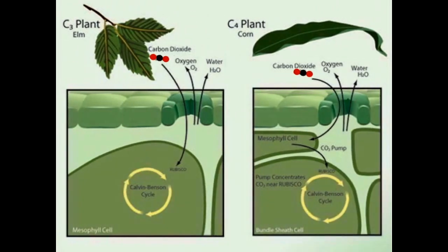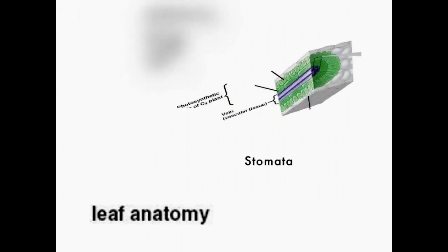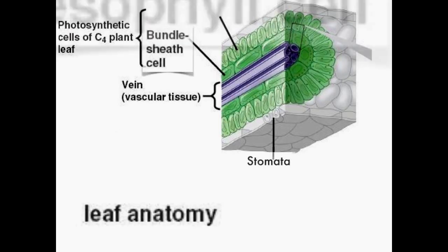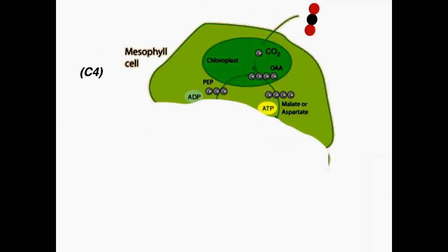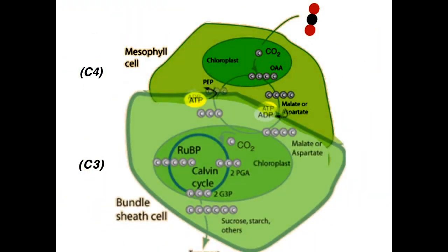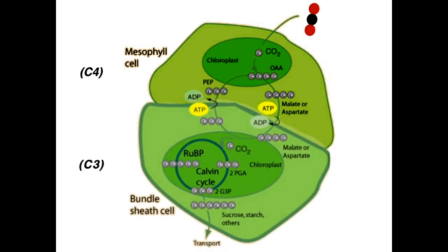The first carbon compound produced in C4 plants is a 4-carbon molecule. In C4 plants, carbon dioxide is first incorporated through the carboxylation of PEP by the enzyme PEP carboxylase in the mesophyll cells. PEP carboxylase is a more efficient enzyme than rubisco and accounts for the environmental tolerances. The C4 acids produced from the carboxylation of PEP are transported to the bundle sheath, where carbon dioxide is re-released and then fixed again through the Calvin cycle. The carbon dioxide also affects how gas and vapor diffuse through the stomata.